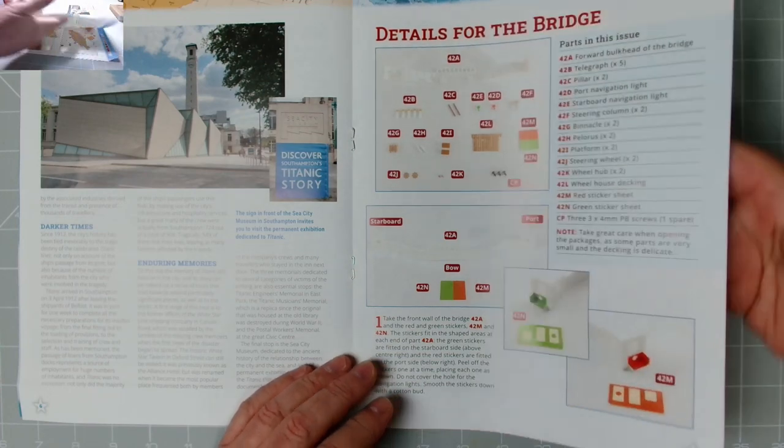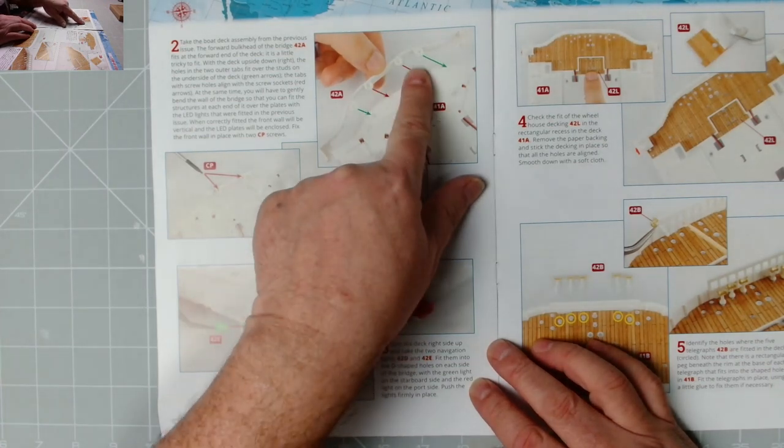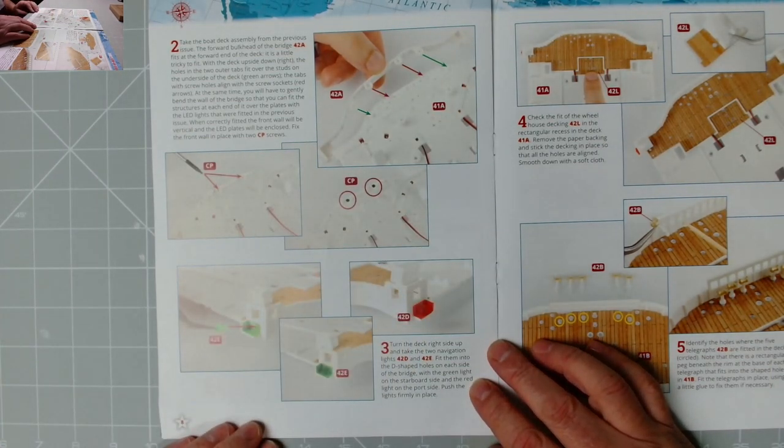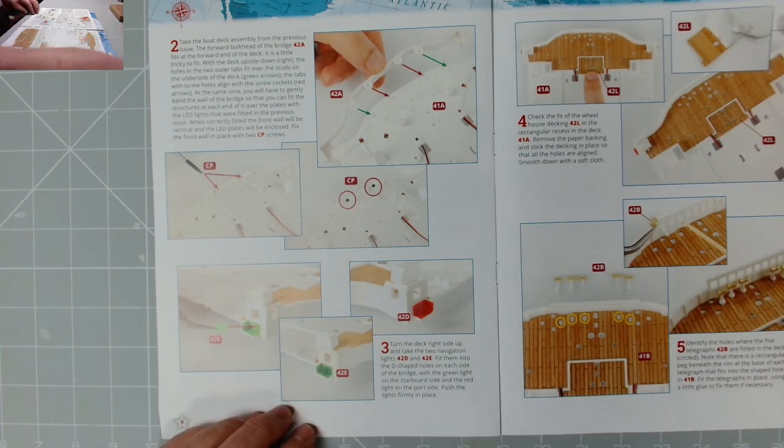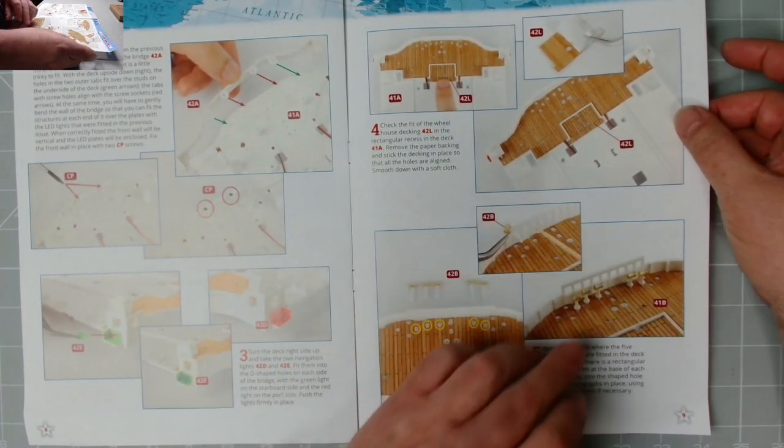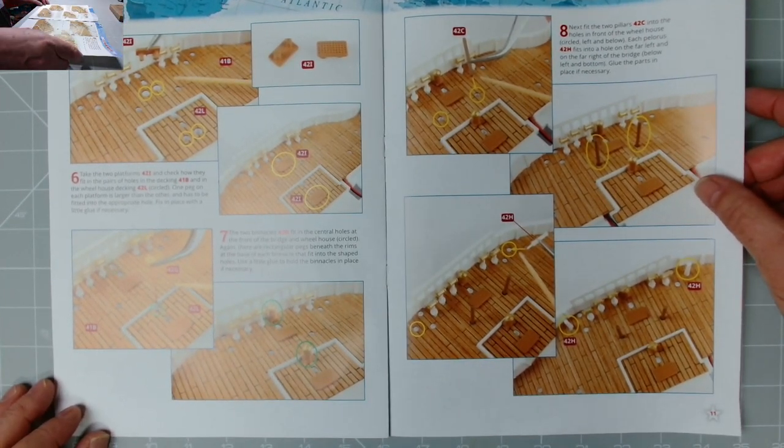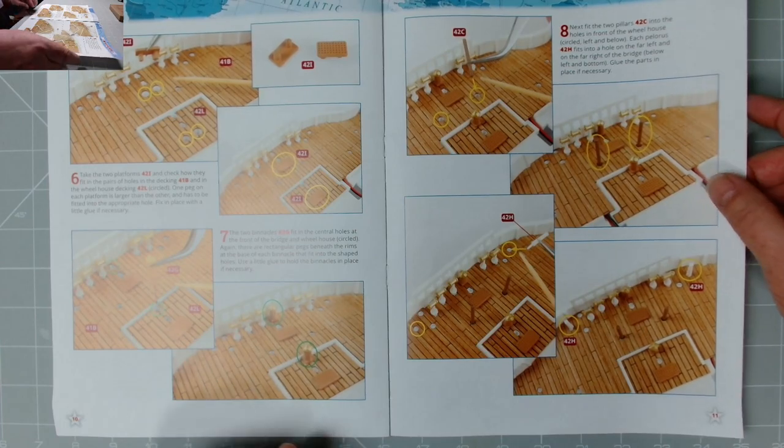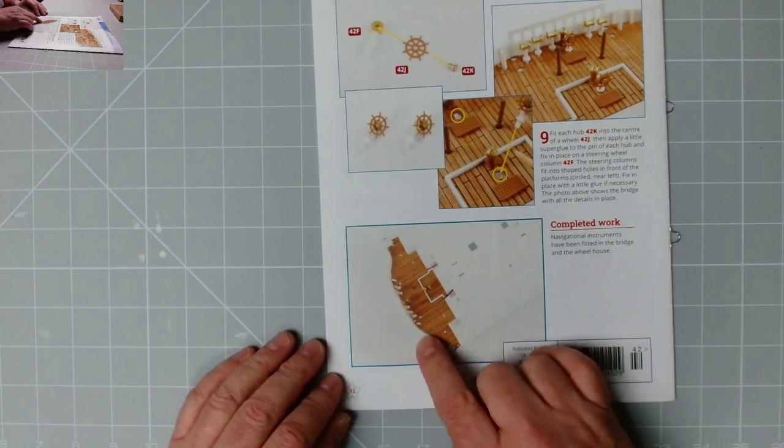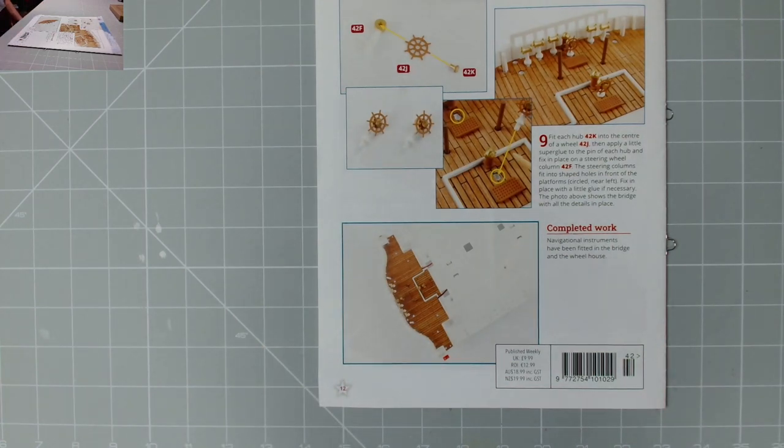We start off by putting the navigation lights in place after we've put the stickers on and the LEDs. Then we put all the detail in. More detail, glad they've colored these in rather than them being white. That is what we end up with. Excellent stuff.